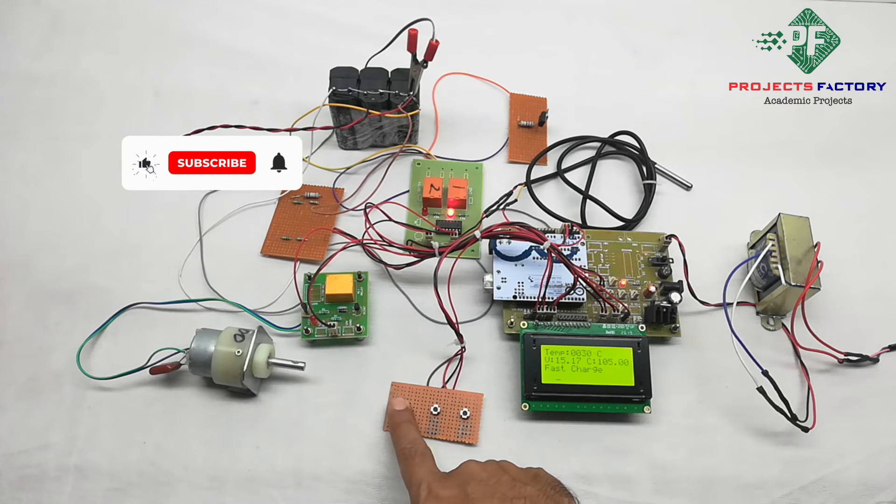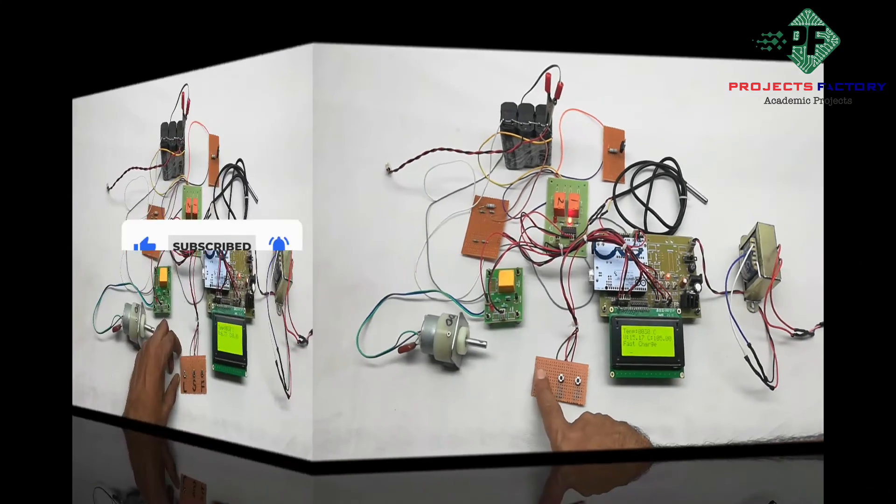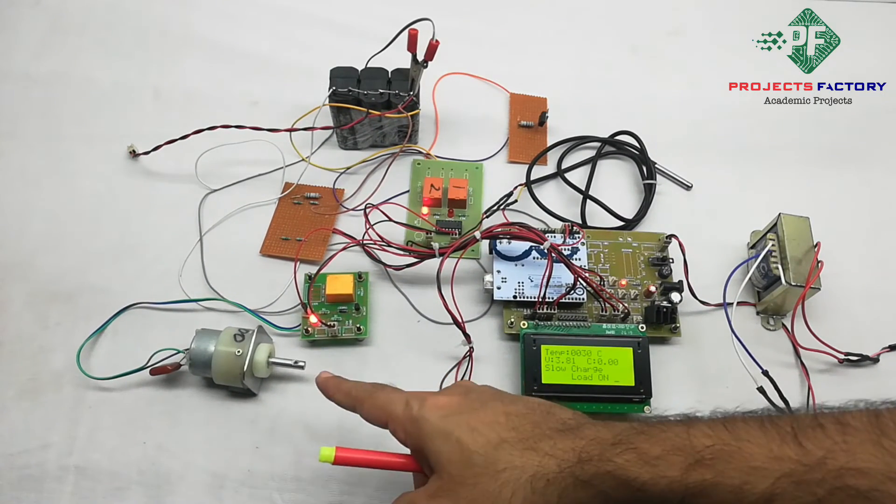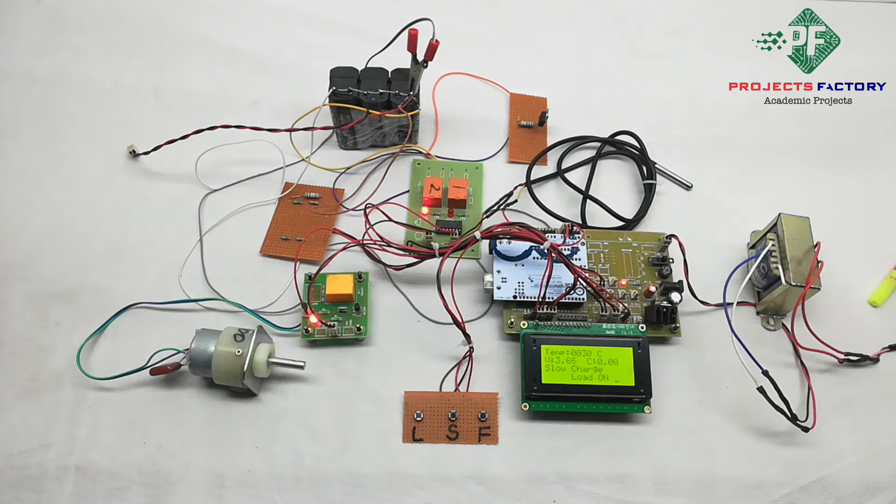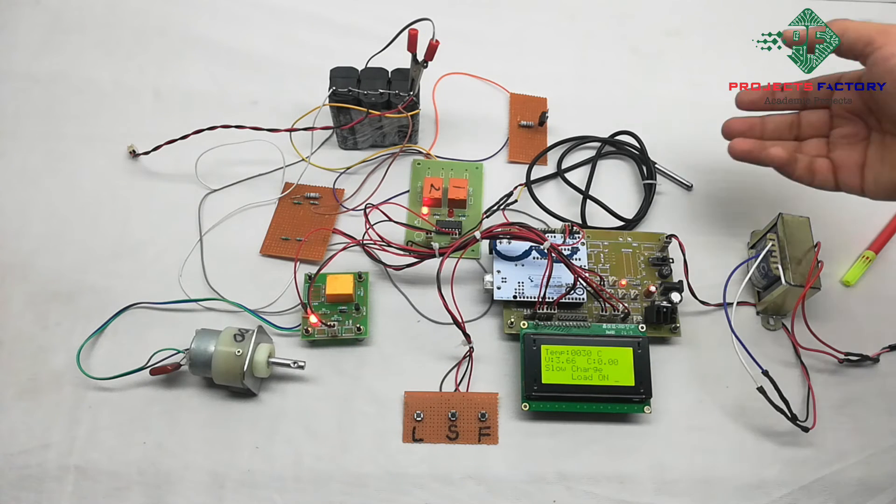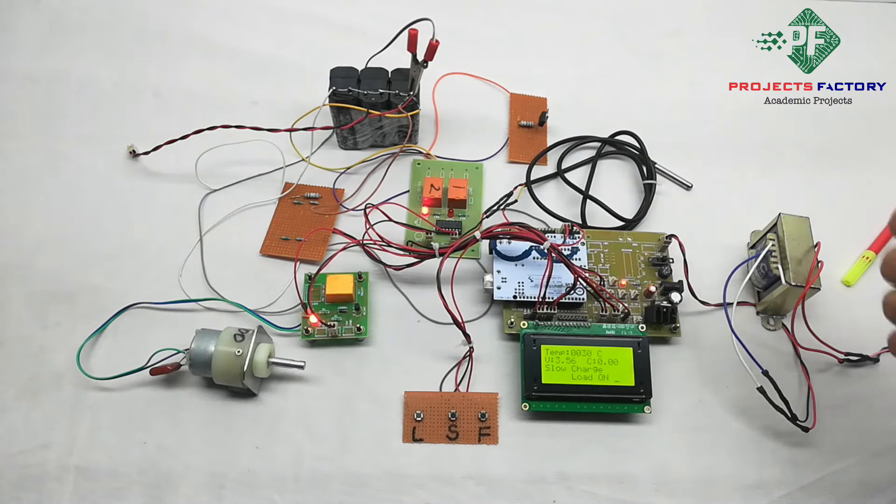When we press 1st time load will be on, if we press 2nd time load will be off. Now load is on, load is running. In this time if temperature is increased, load will be cut off automatically.